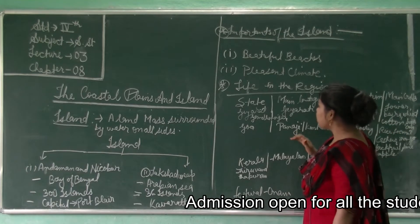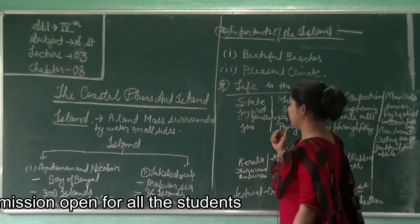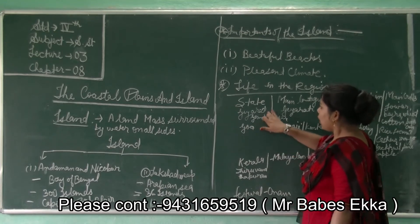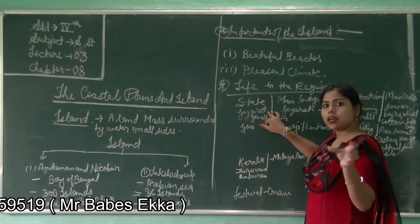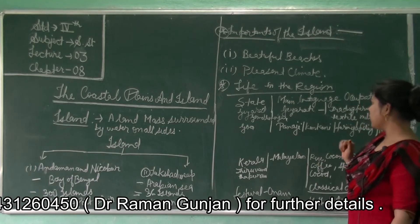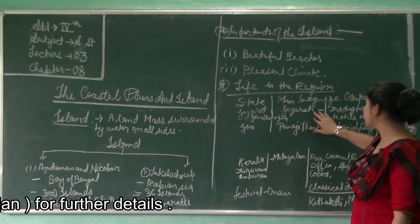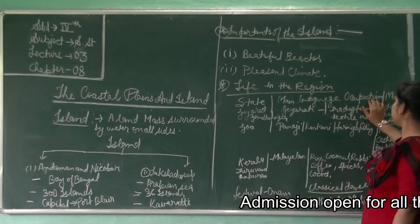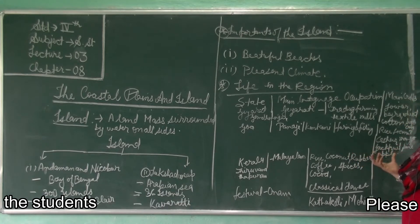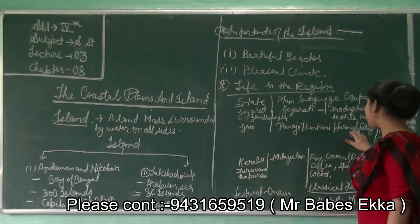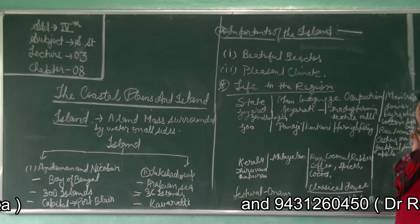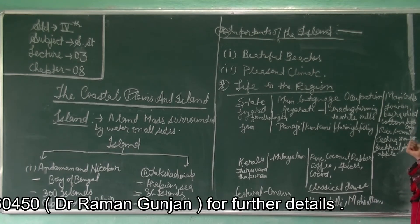We will see some of the states that lie in the coastal plains. One of these states is Gujarat in the west. The capital of Gujarat is Gandhinagar and the main language spoken here is Gujarati. The occupation that people follow is trading, farming, and working in textile mills. The main crops grown here are Jowar, Bajra, wheat, cotton, and sugarcane.